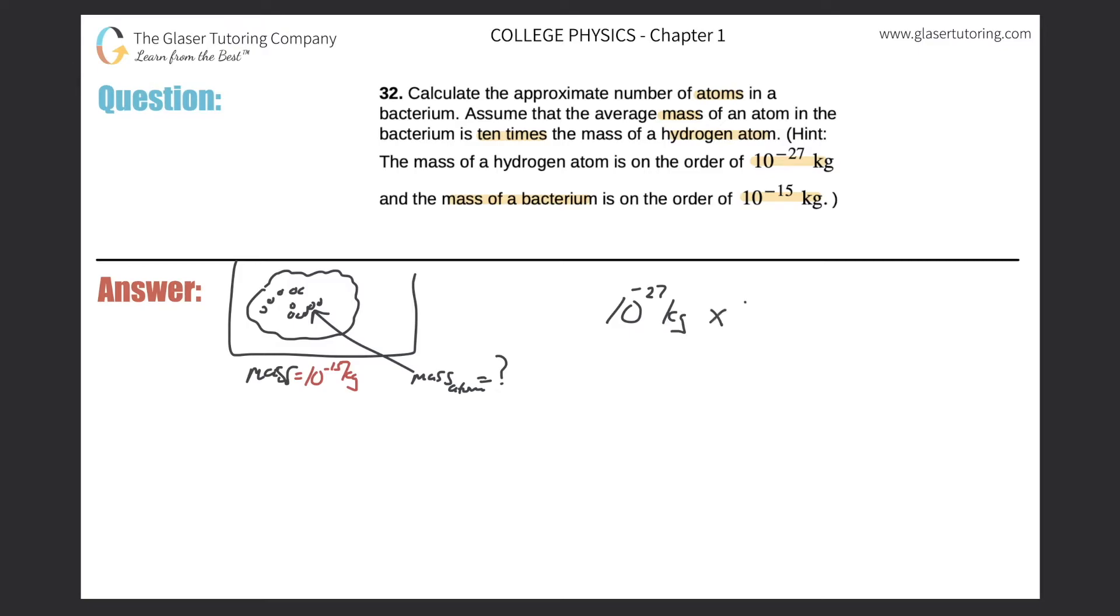Now if I take that value and multiply it by 10, this should then, and this is kilograms per atom by the way. If I take that value and multiply it by 10, I should get the, now 10 raised to the negative 26 kilograms per atom. And I'll just add one word here, per atom of bacterium. This ratio on the left-hand side was per atom of hydrogen. Okay, so this makes sense. So now here is the average mass of an atom that's found within a bacterium.